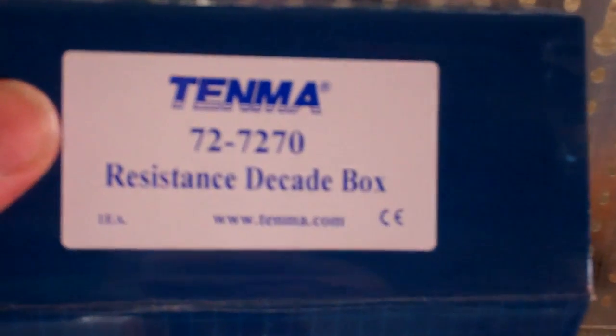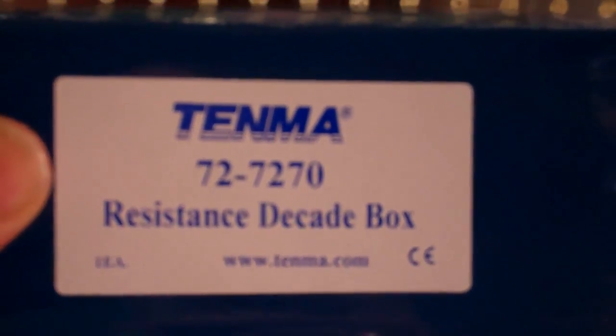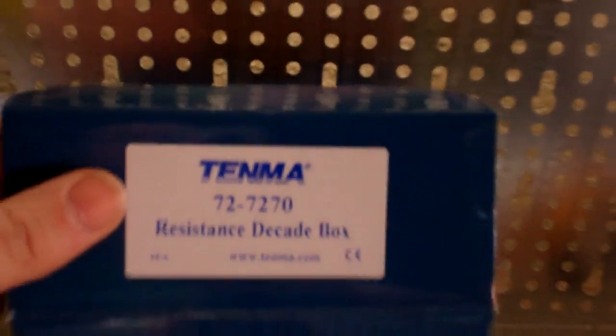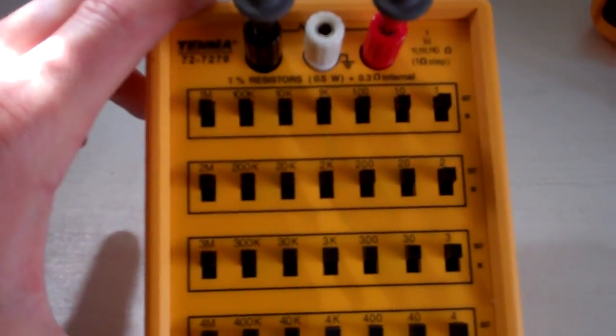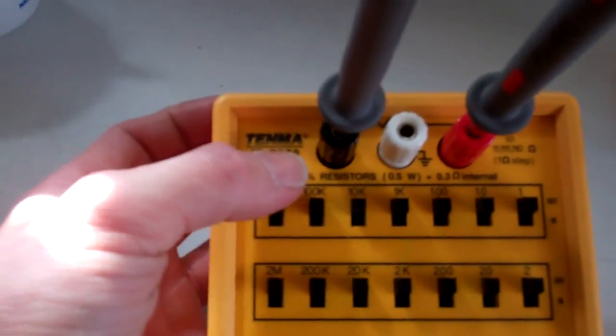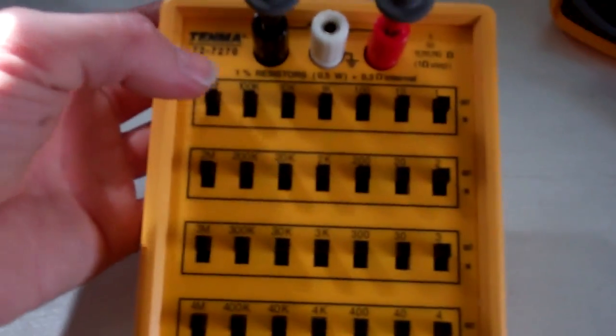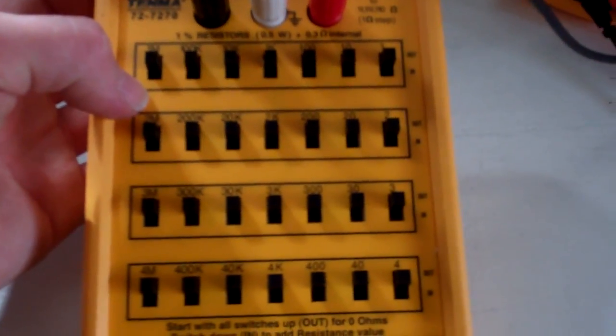That's the manufacturer and the model number. But if you go online and just go on Google Images and put in decade box, you'll get a picture of this, something similar. There's another one that comes up with a different make, but it's the same thing. It just looks like it's got a different label on there.